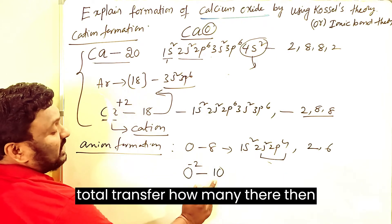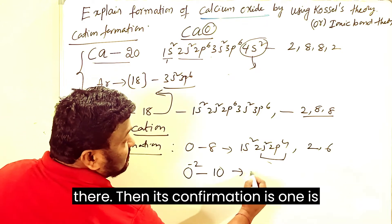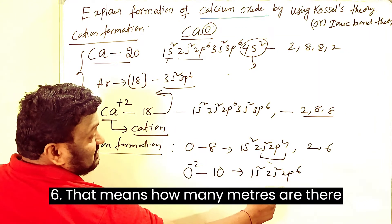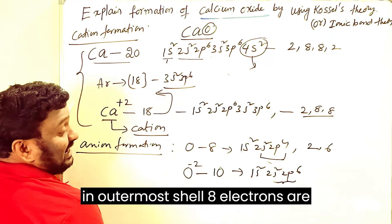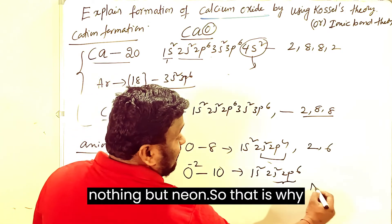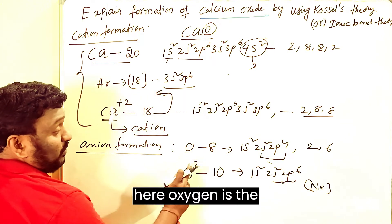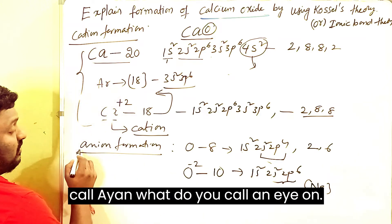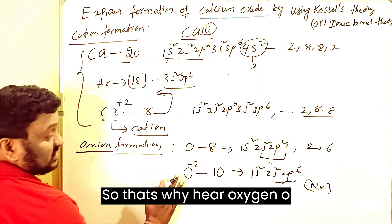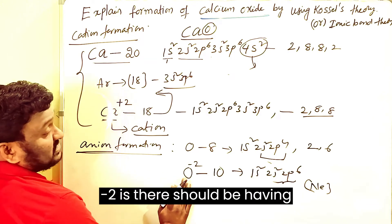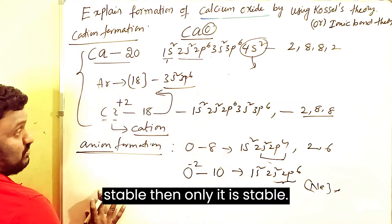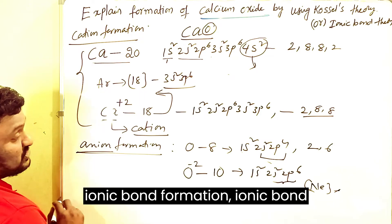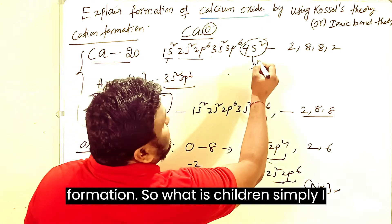When oxygen receives 2 electrons, the total electrons become 10, giving the configuration 1s² 2s² 2p⁶ — which is the configuration of neon. This gives 8 electrons in the outer shell. O is the neutral atom and O²⁻ is the negatively charged ion. A negatively charged ion is called an anion. O²⁻ has the configuration of neon and is therefore stable.